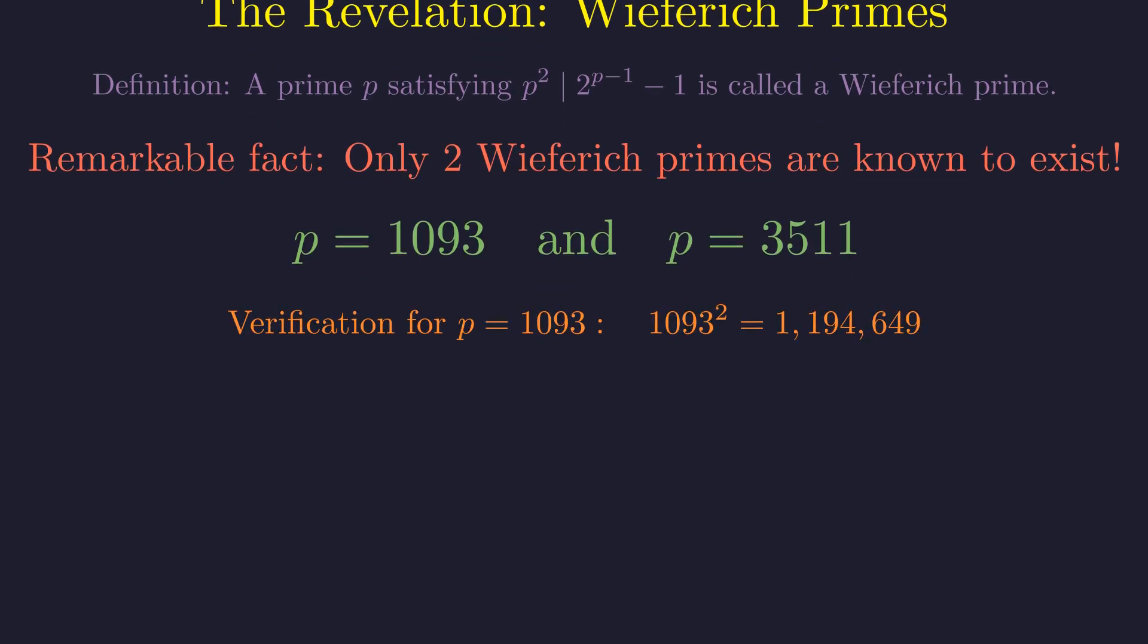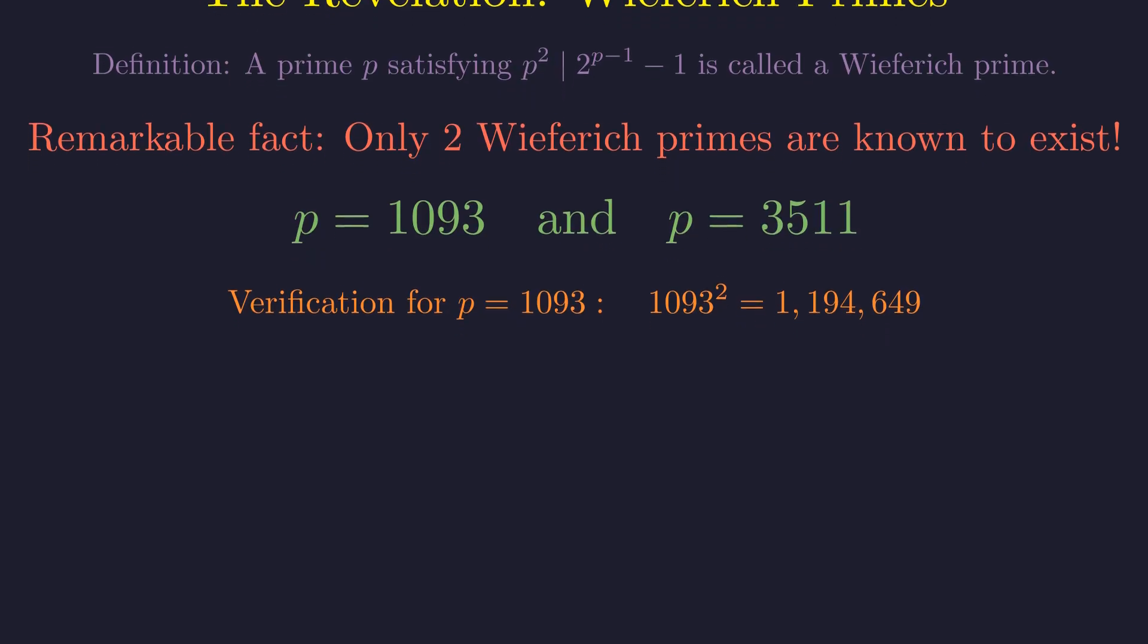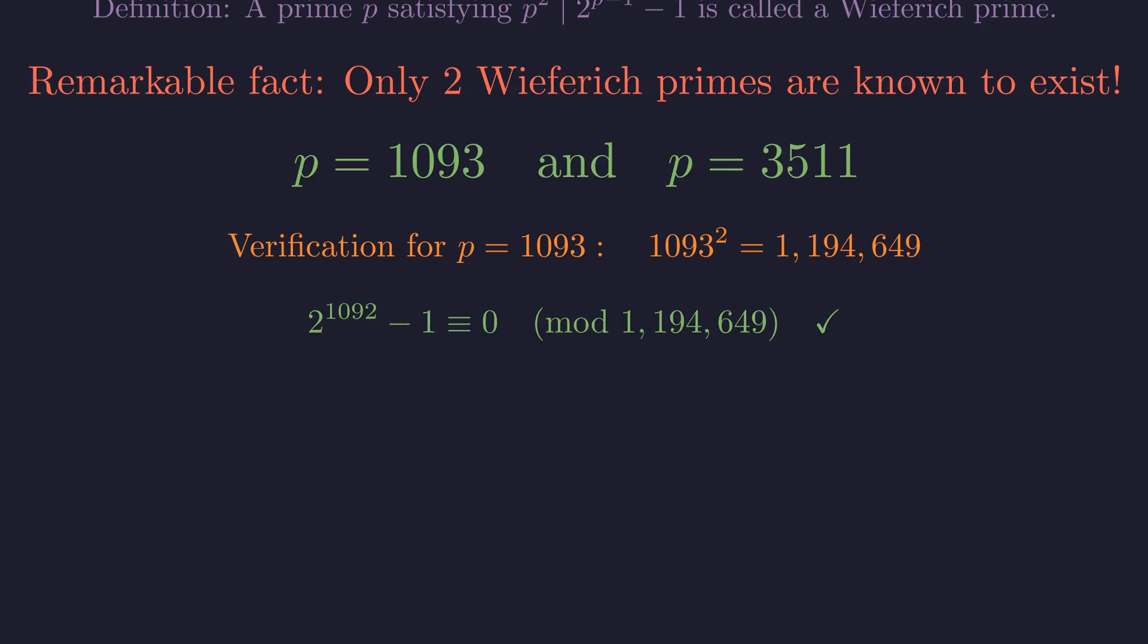These precious mathematical gems are 1,093 and 3,511. Let's verify our first solution. For p equals 1,093, p squared equals 1,194,649. And indeed, 2 to the power of 1,092 minus 1 is divisible by this enormous number. The mathematics checks out perfectly.